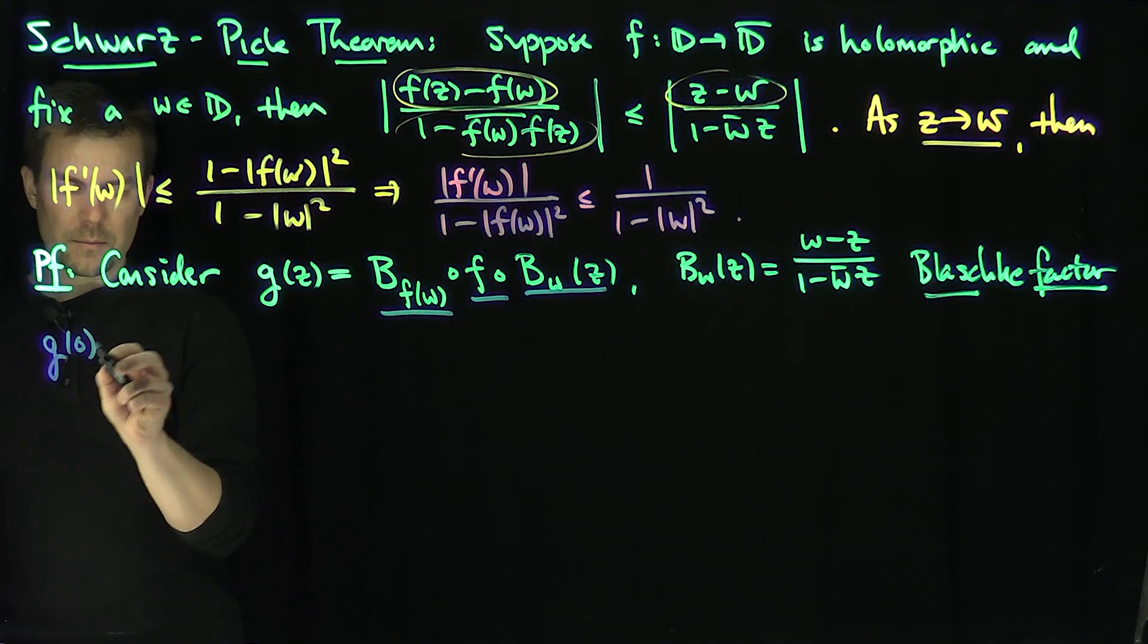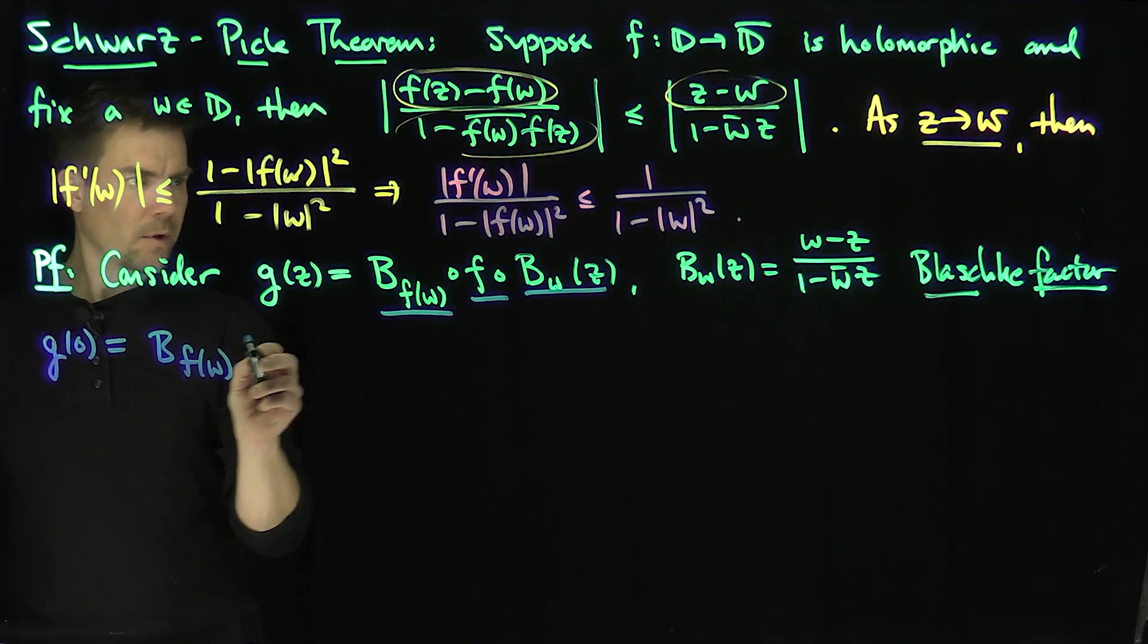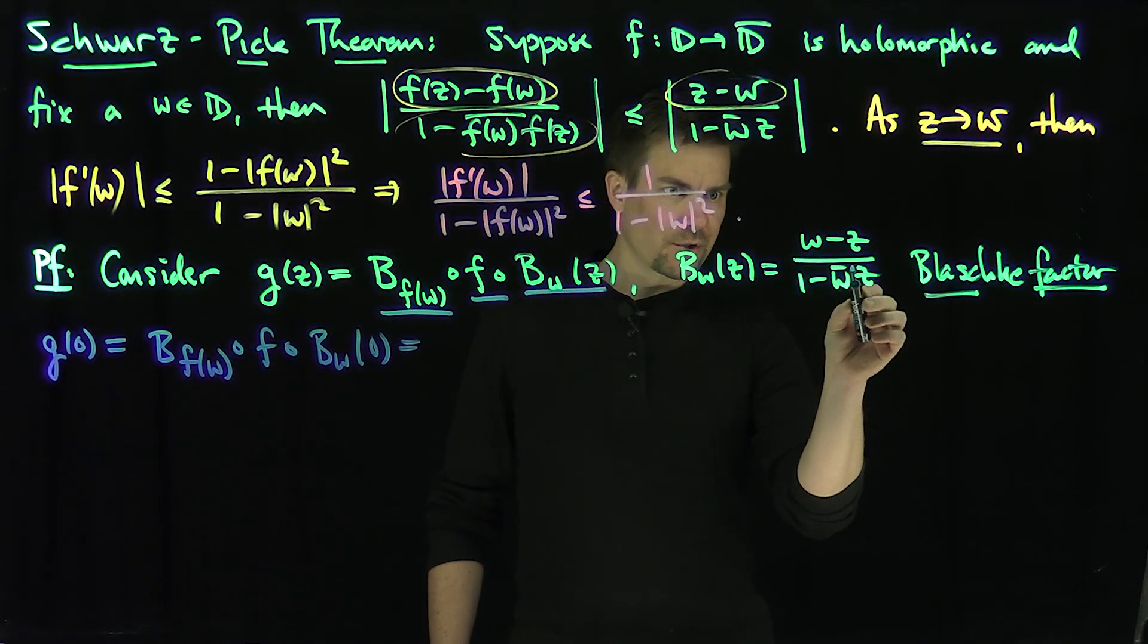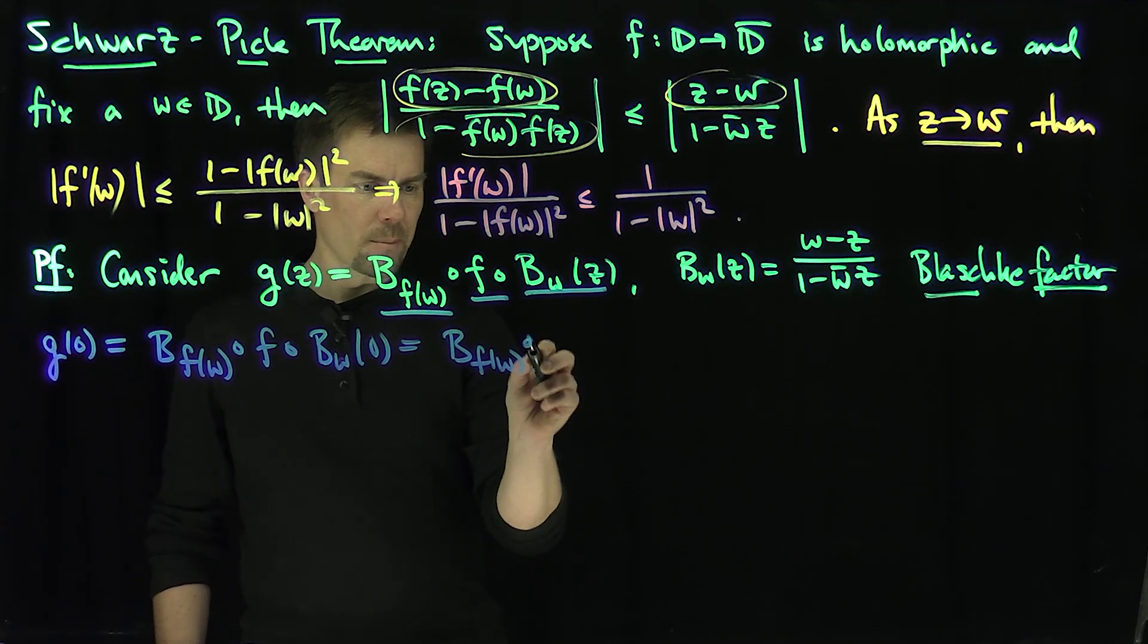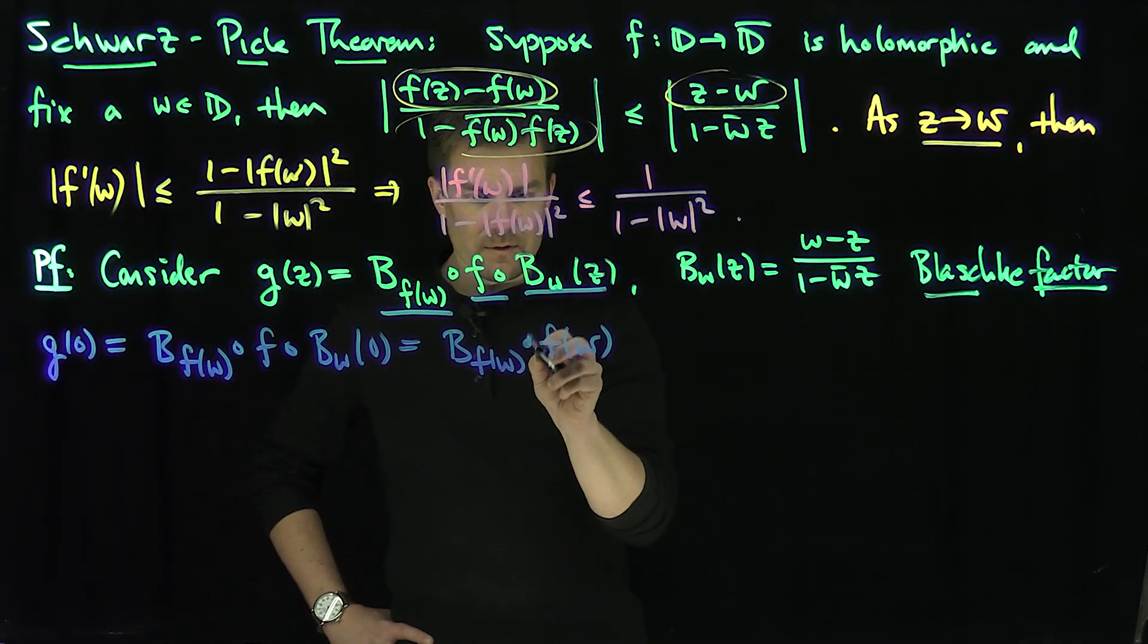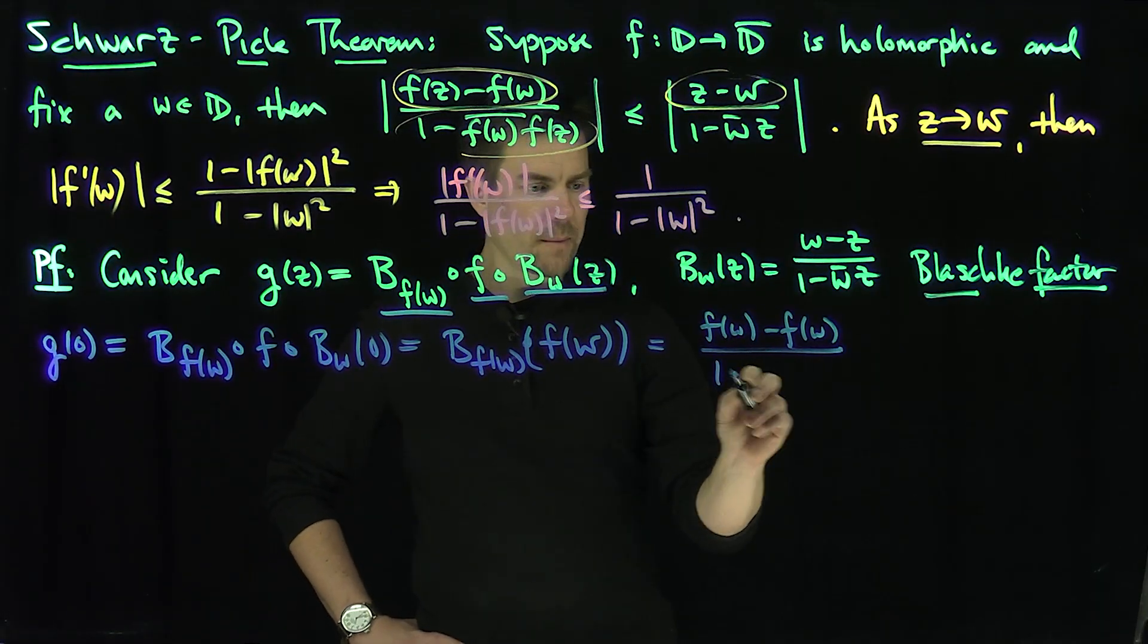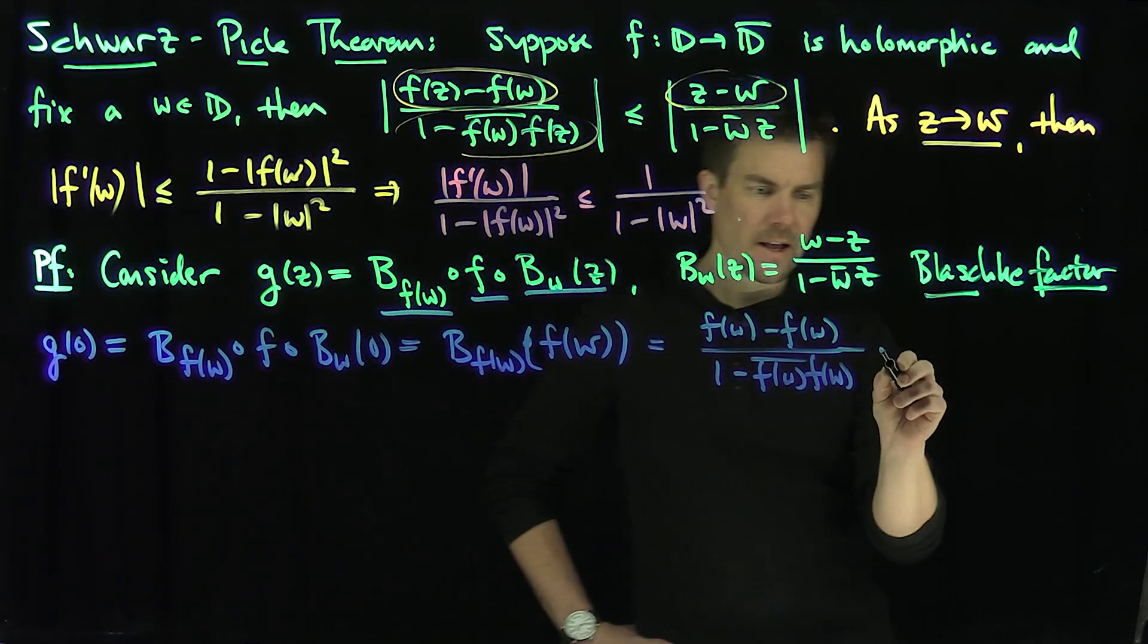g(0) is going to be B_{f(w)} of f of B_w(0). Now, what is B_w(0)? B_w(0) is just going to be w. So this is going to be B_{f(w)} composed with f(w), which is f(w) minus f(w) all divided by 1 minus f(w) bar f(w). And that's 0.